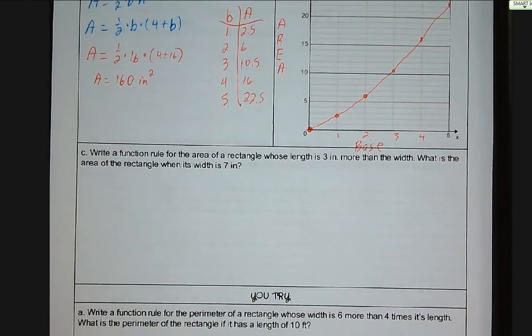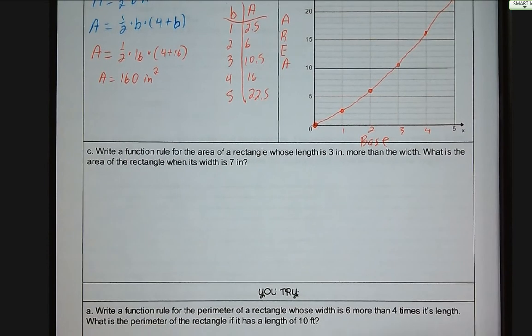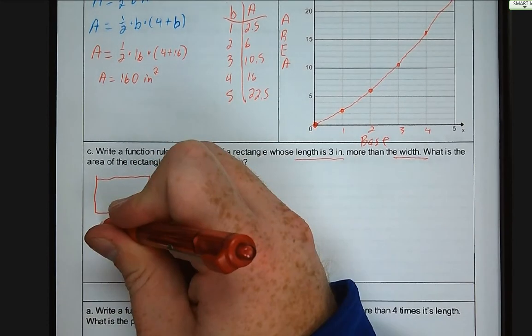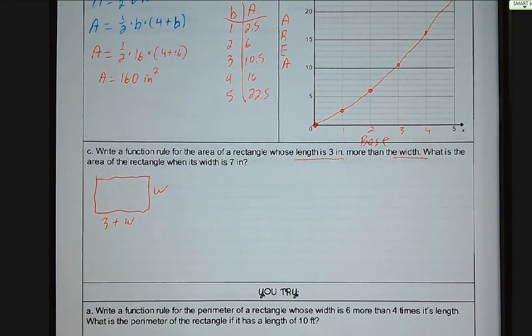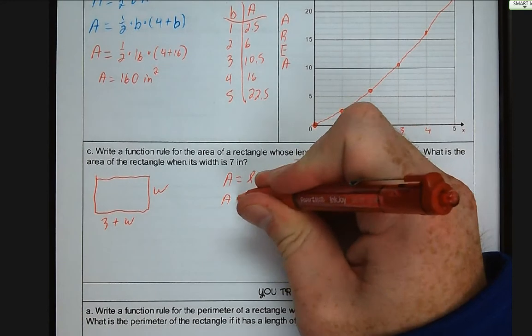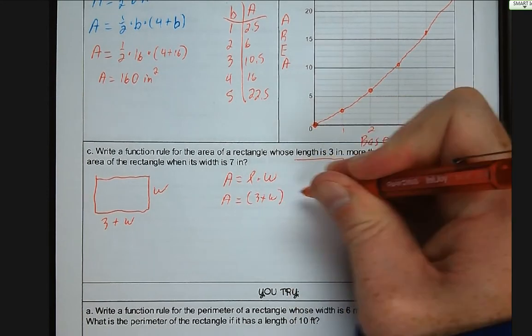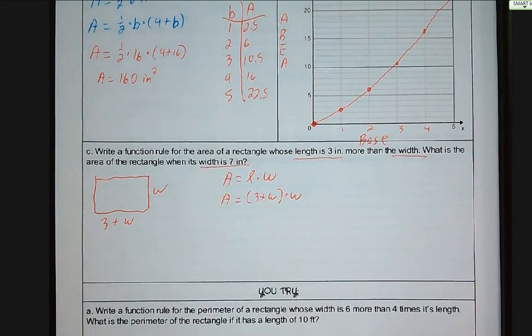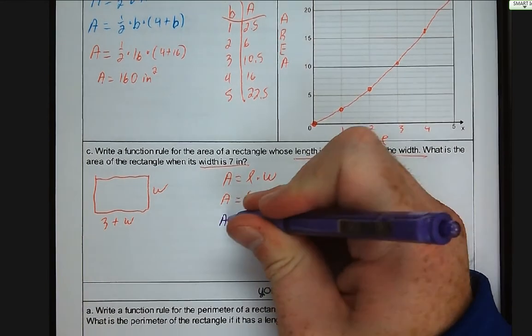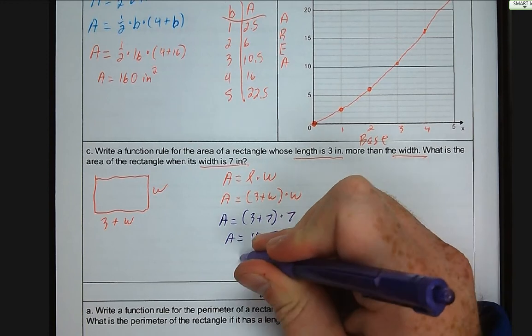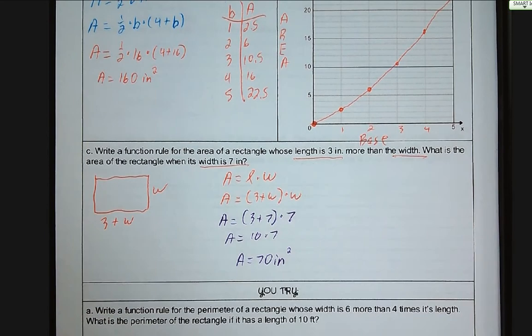Write a function rule for the area of a rectangle whose length is three inches more than its width. So let's draw a quick little picture here. We have the width, and the length is three inches more than the width, so it's three plus W. And we want to know the area of that rectangle. So we need to multiply area is length times width. And if we know our length in this case is three plus W times W, we want to know what is the area of the rectangle with a width of seven inches. So we are going to plug seven into our equation, three plus seven times seven, A is equal to 10 times seven. So the area is 70 inches squared.